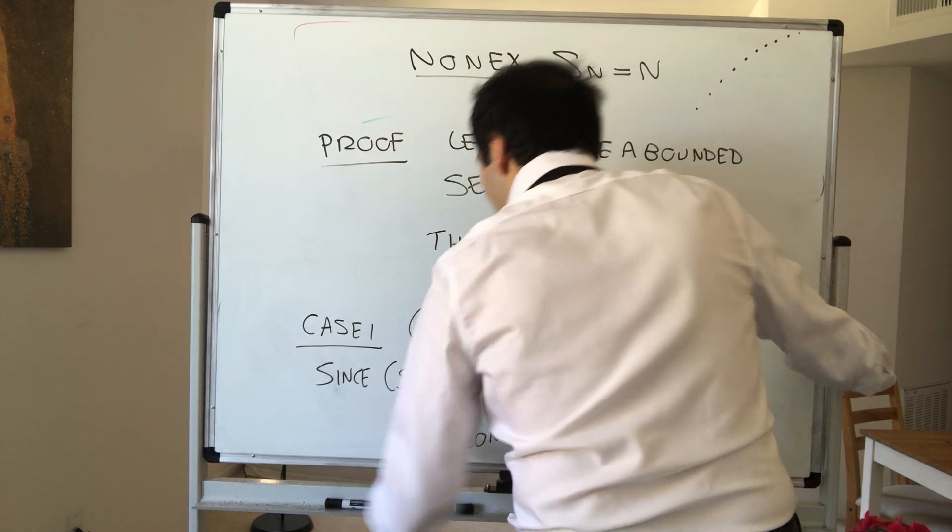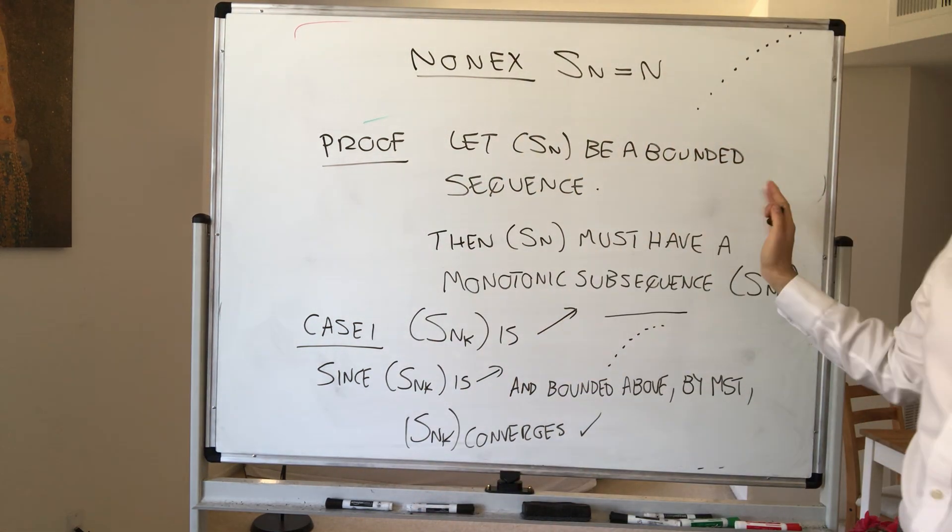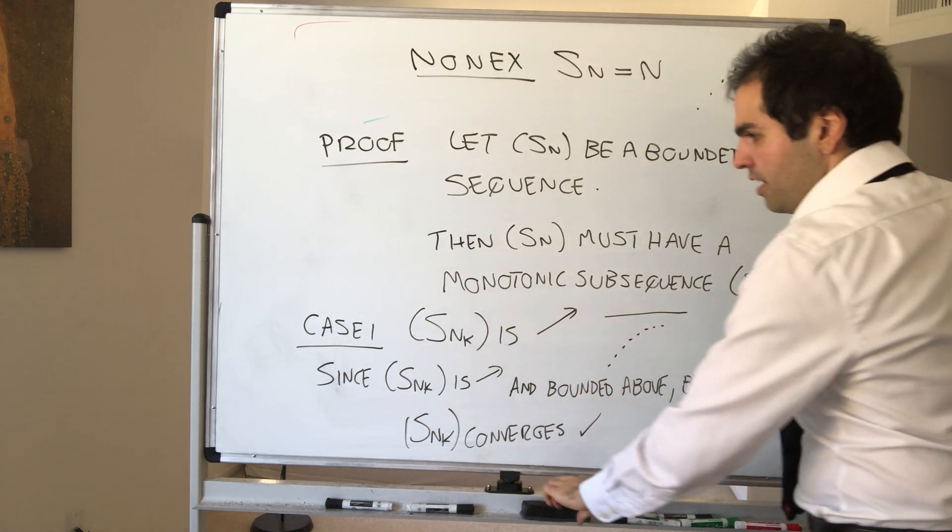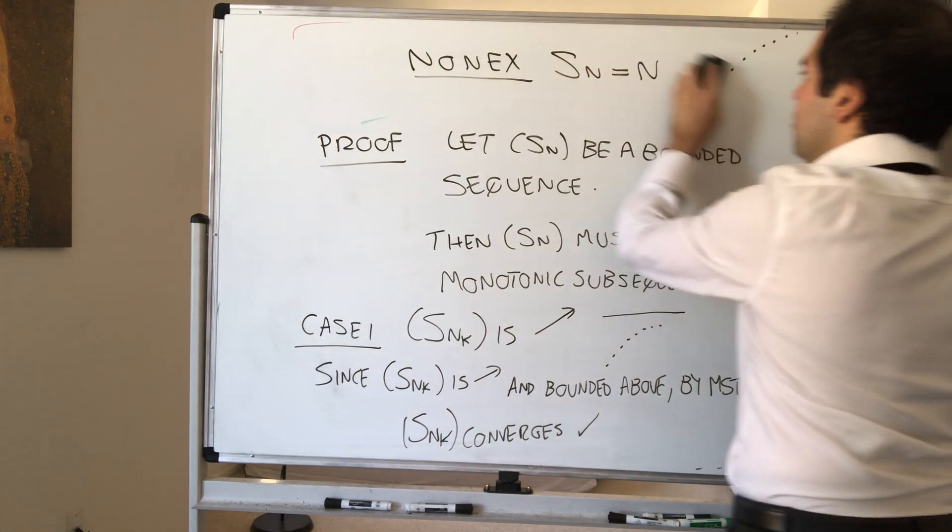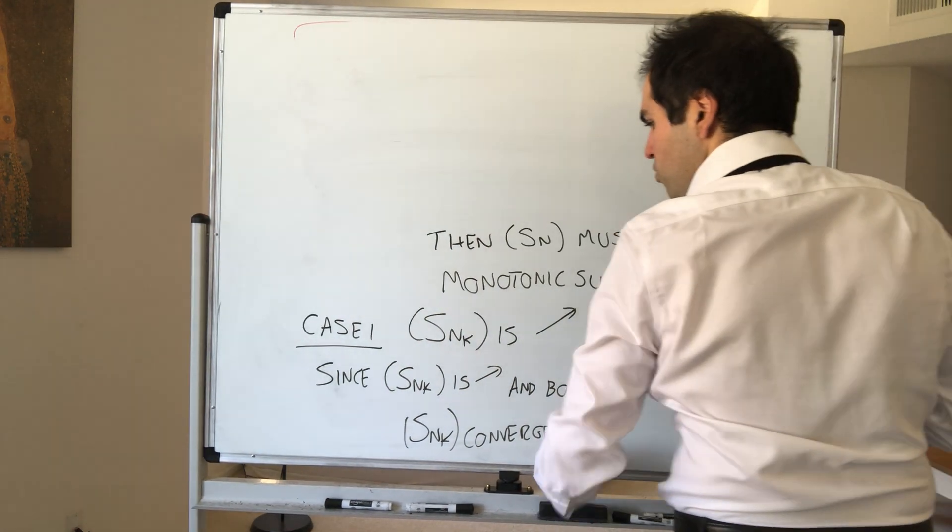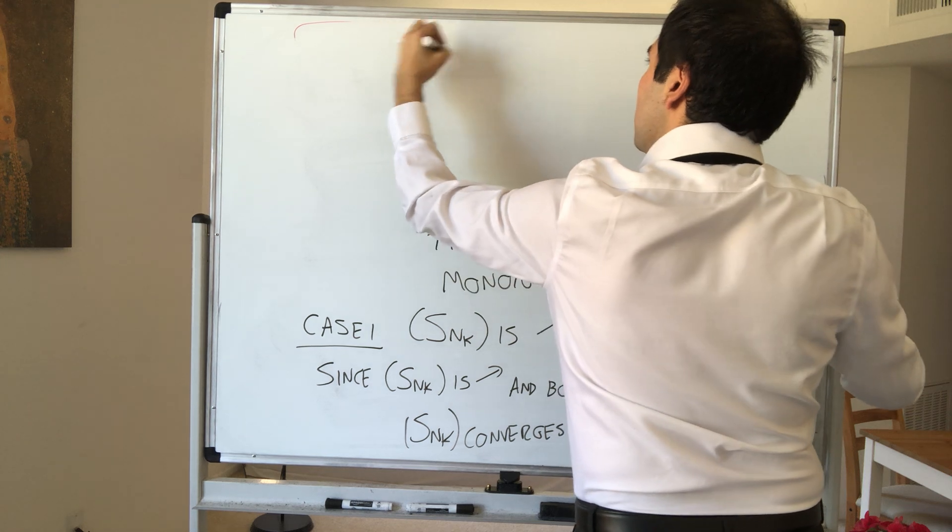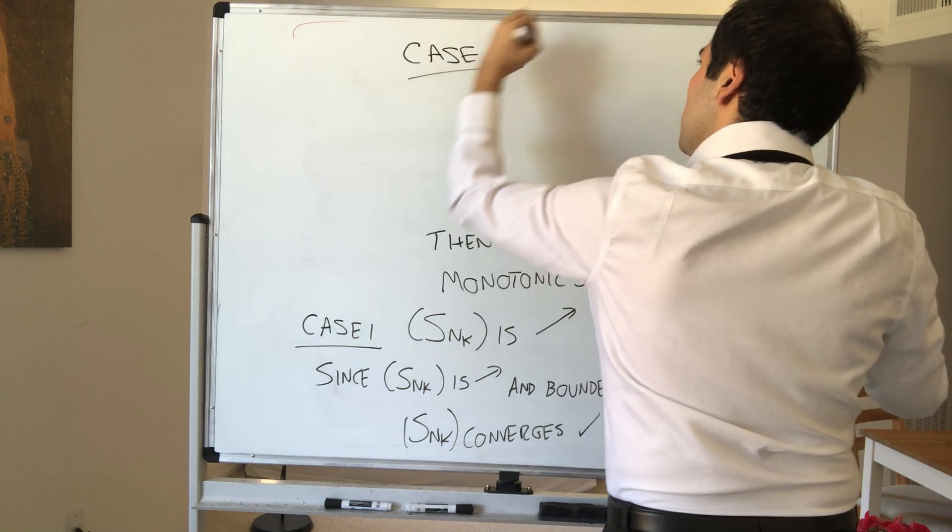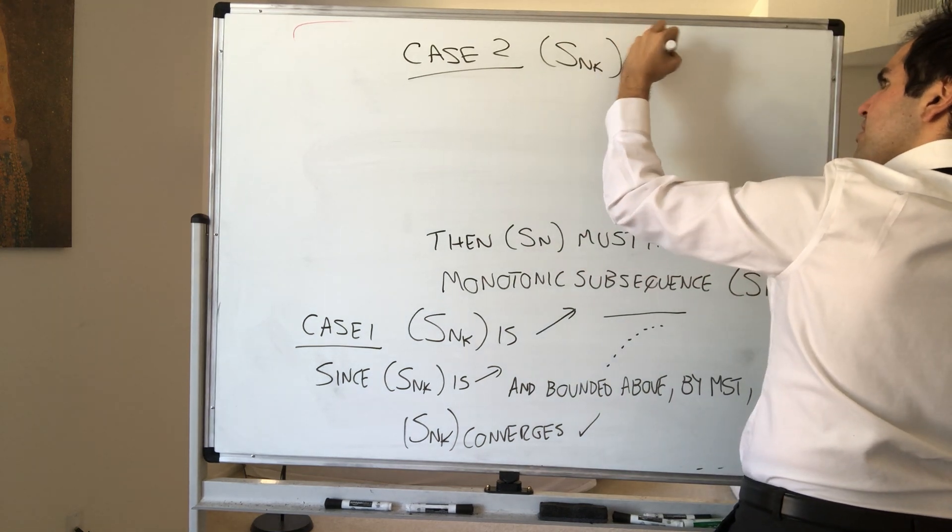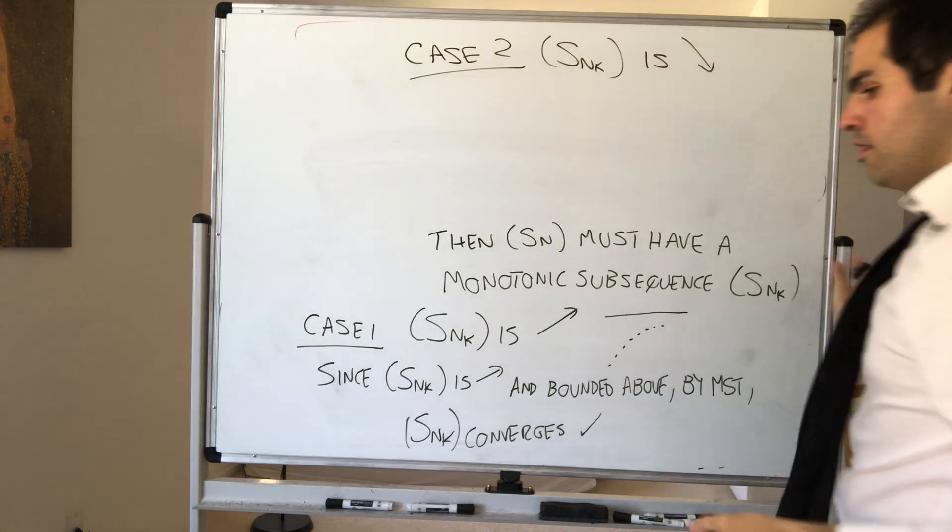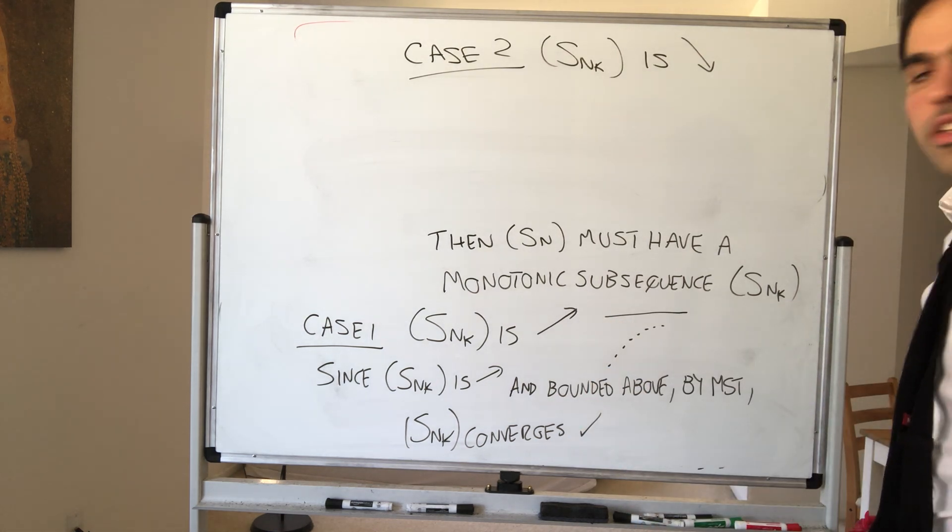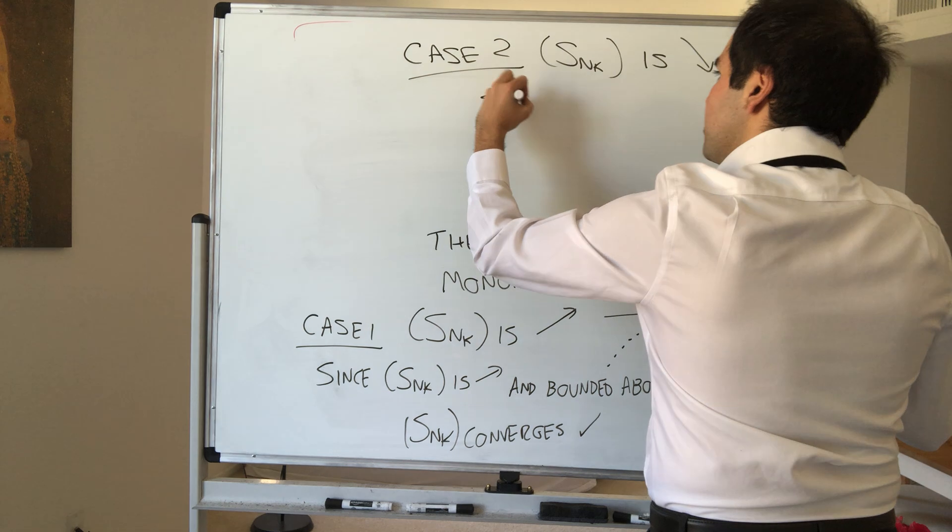In other words, we found a subsequence of Sn, namely Snk, that converges, at least in this case, but the other case is entirely similar. So case two: if Snk is non-increasing, then basically, it's non-increasing and bounded below, so also it converges. So, the point is, this is similar.